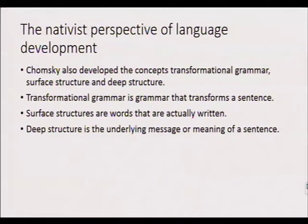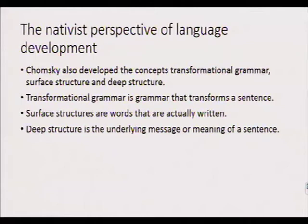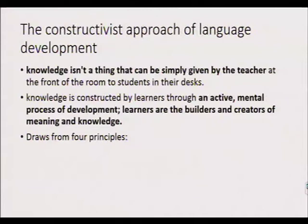Chomsky also developed the concept of transformational grammar, surface structure, and deep structure. Transformational grammar is grammar that transforms a sentence — for example, 'the boy goes to school' can have 'the boy' replaced with 'the man,' 'the woman,' 'the girl,' and the other parts remain similar in meaning. Surface structure refers to the words as they are actually written or spoken. But there are underlying meanings of such words — we call that the deep structure.